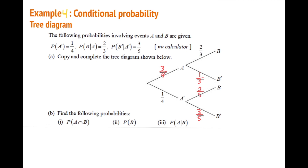Part a: find P(A and B). The only branch where both A and B occur is the A-then-B branch. So P(A and B) = 3/4 × 2/3 = 1/2.